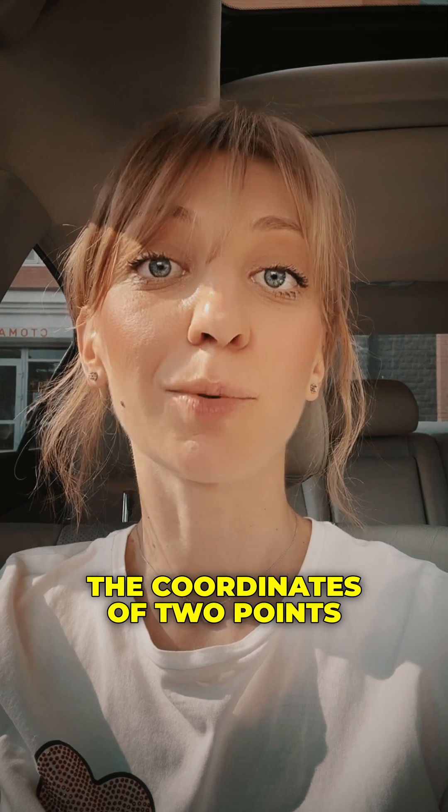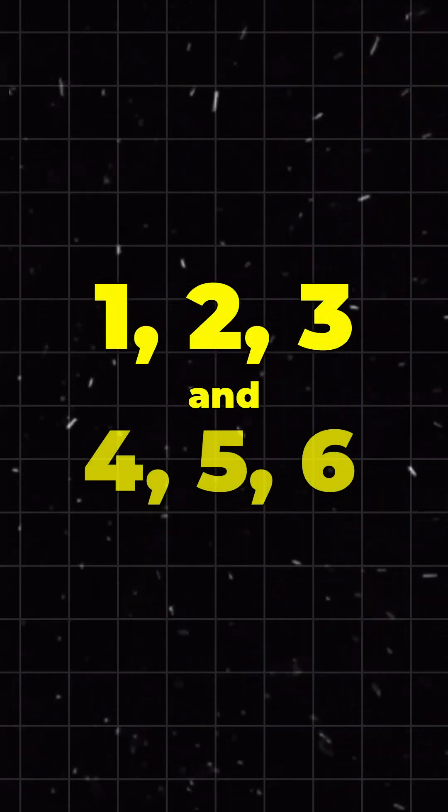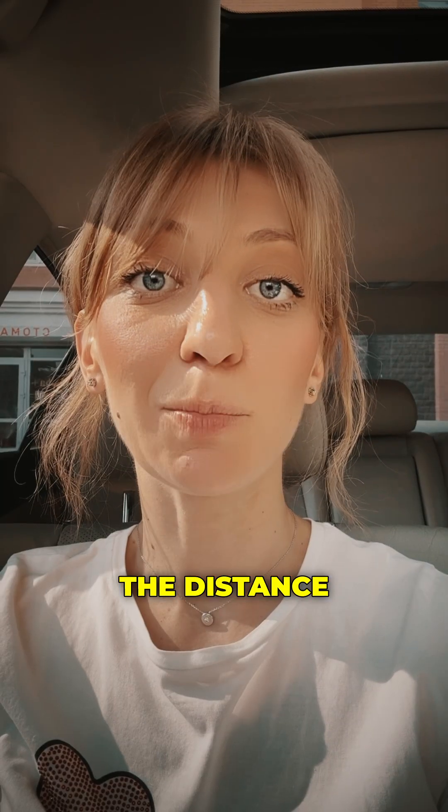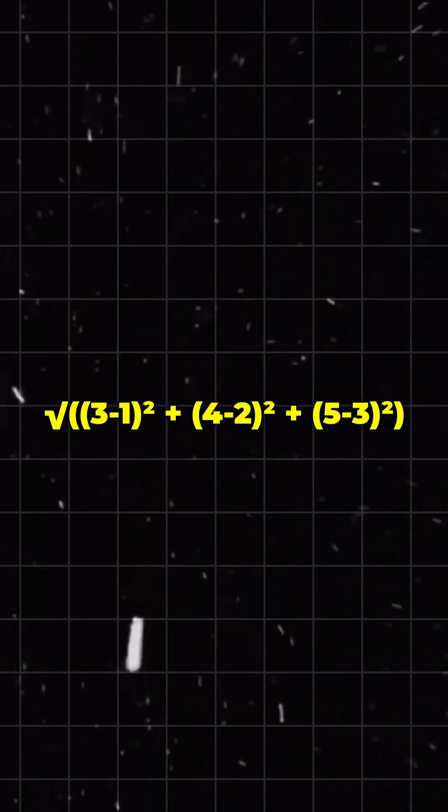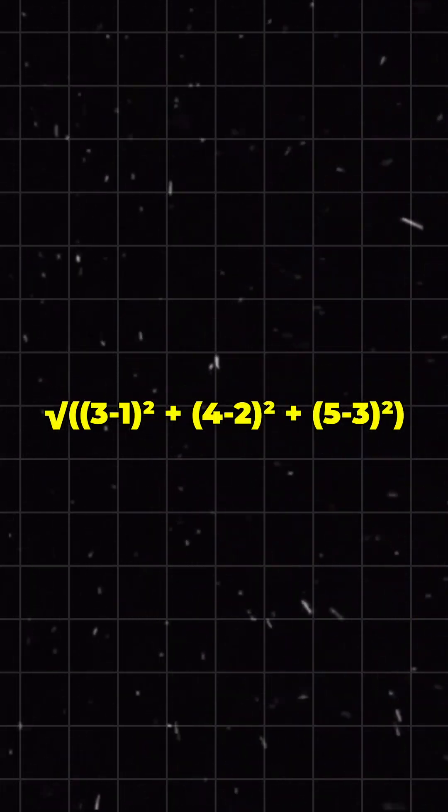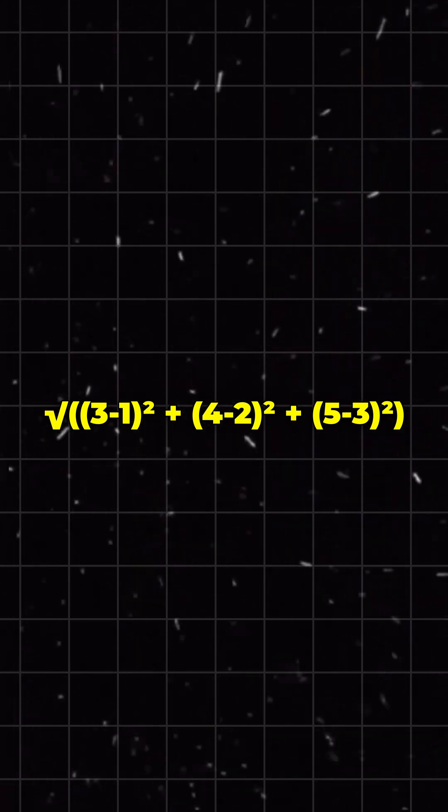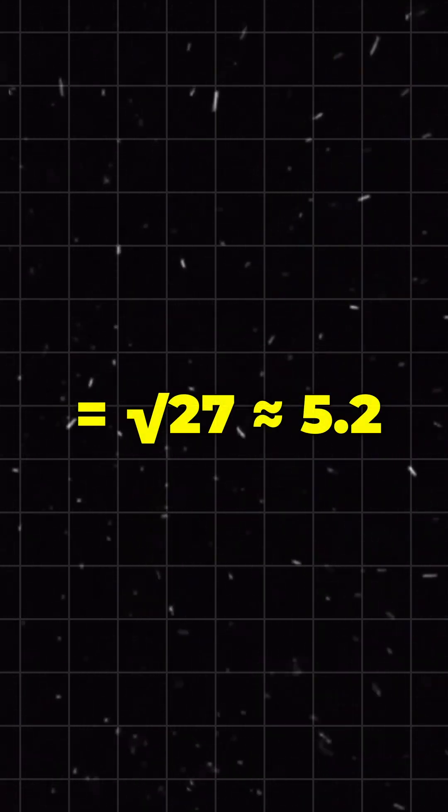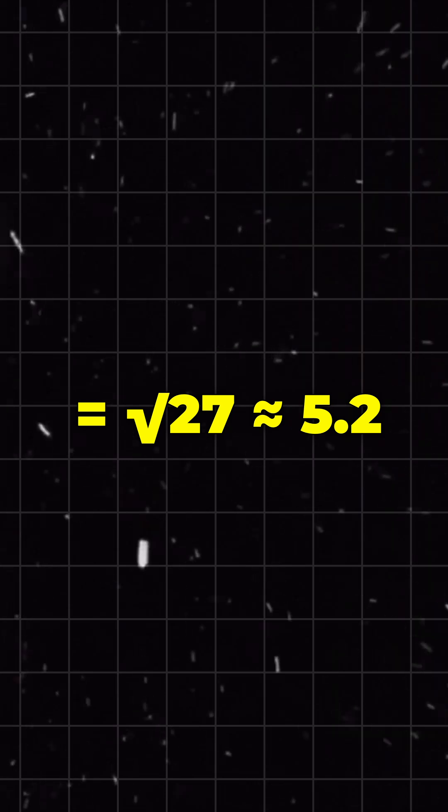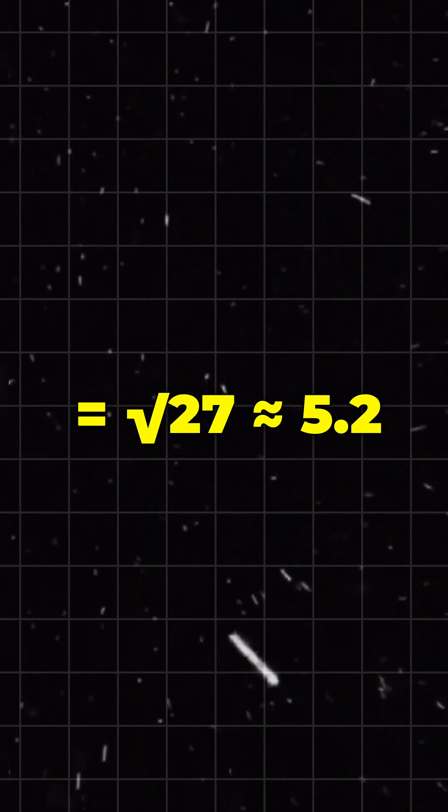the coordinates of two points are (1, 2, 3) and (4, 5, 6). The distance between them equals square root of (4 minus 1) squared plus (5 minus 2) squared plus (6 minus 3) squared, which equals square root of 27, approximately 5.2.